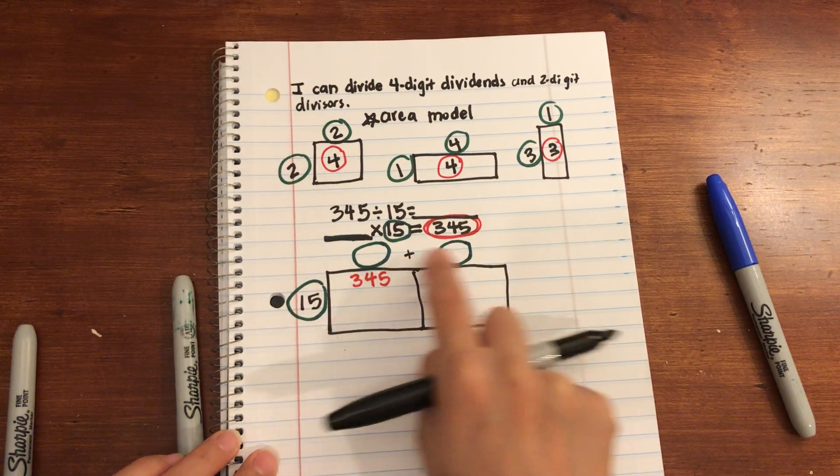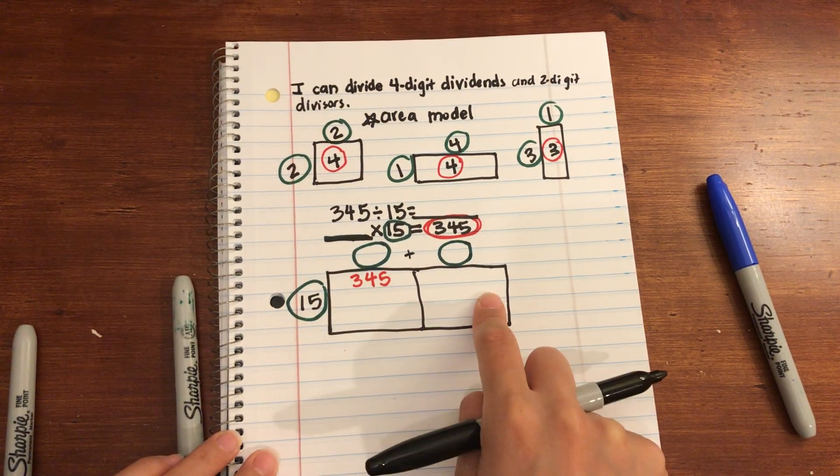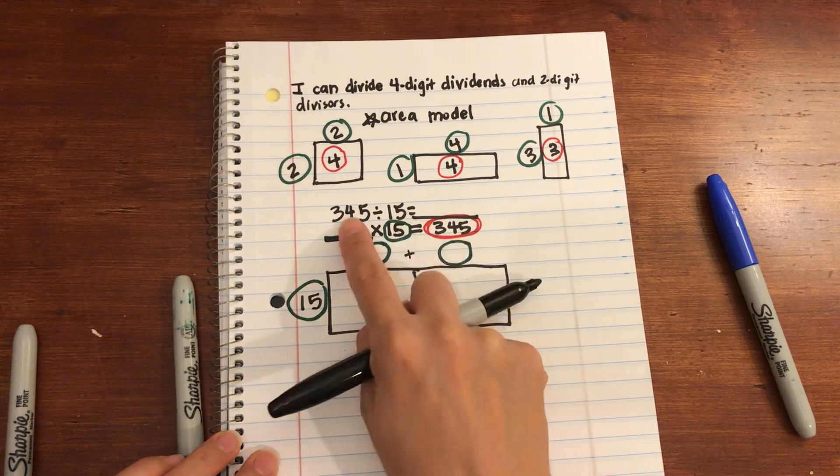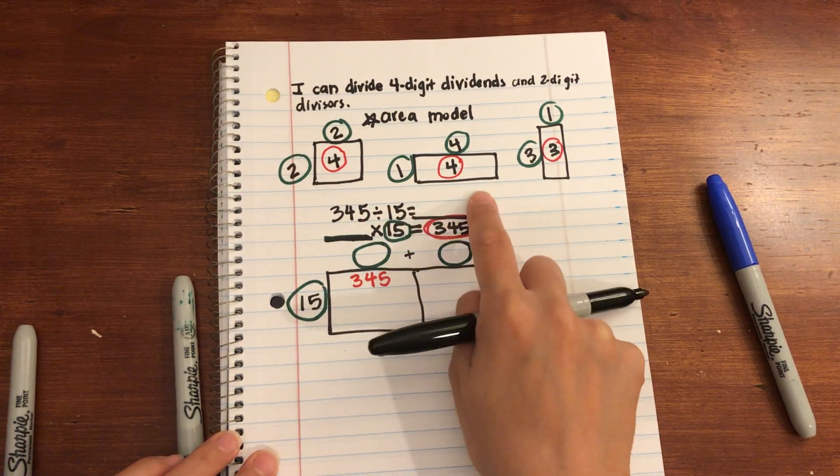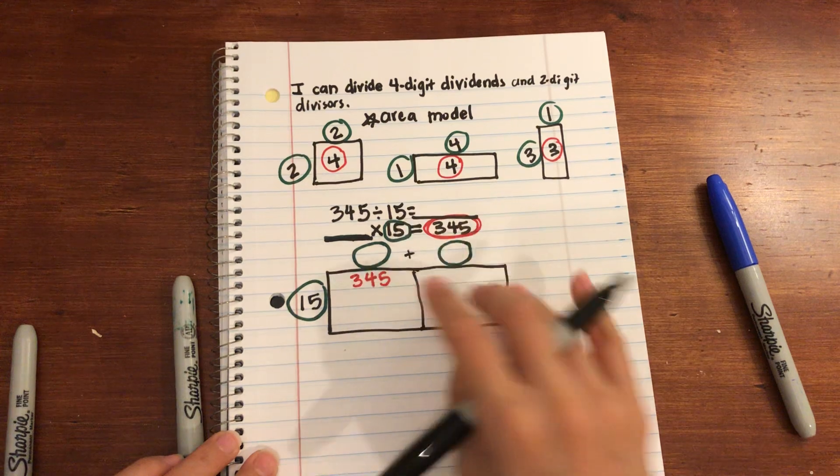So 15 times something is equal to 345. 345 divided by 15 is equal to something. Being able to see that inverse relationship.